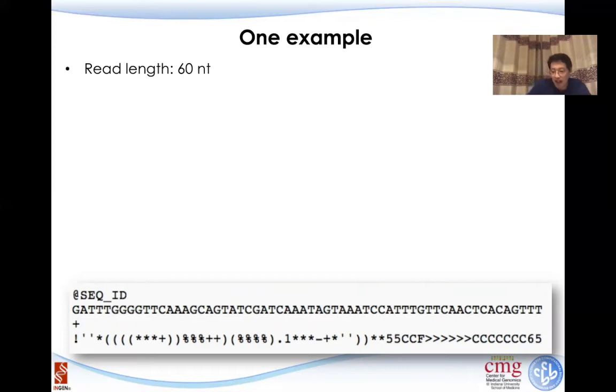Coming back to this particular nucleotide read and the four different lines, the second line is the character, the ACGTs, the last line is quality. So the first information we know from this line is the read length is 60 base pairs. That is pretty straightforward. And if you count it, there are 60 letters.